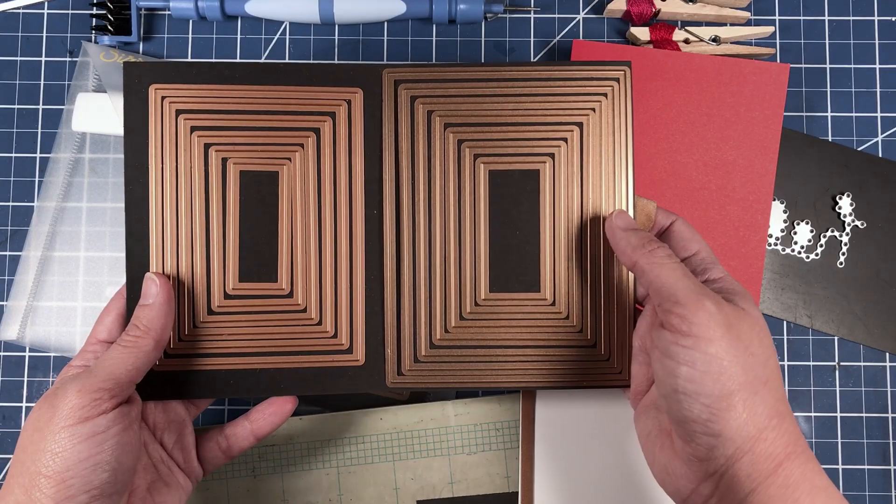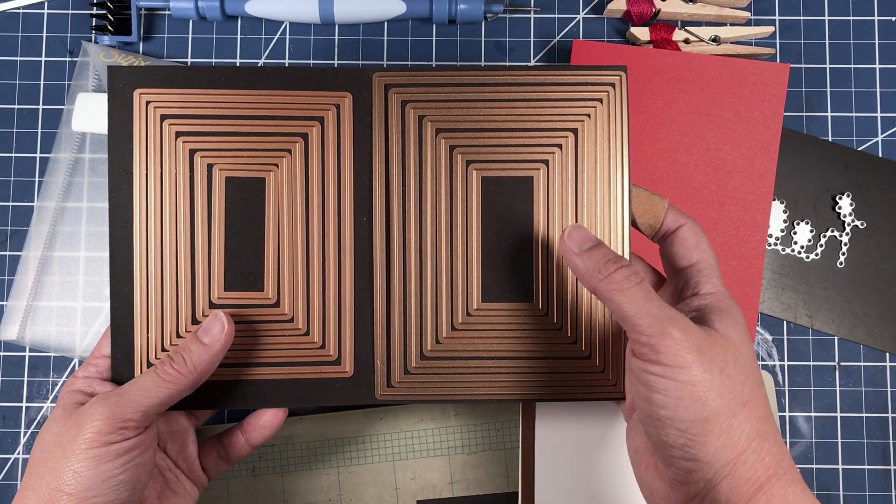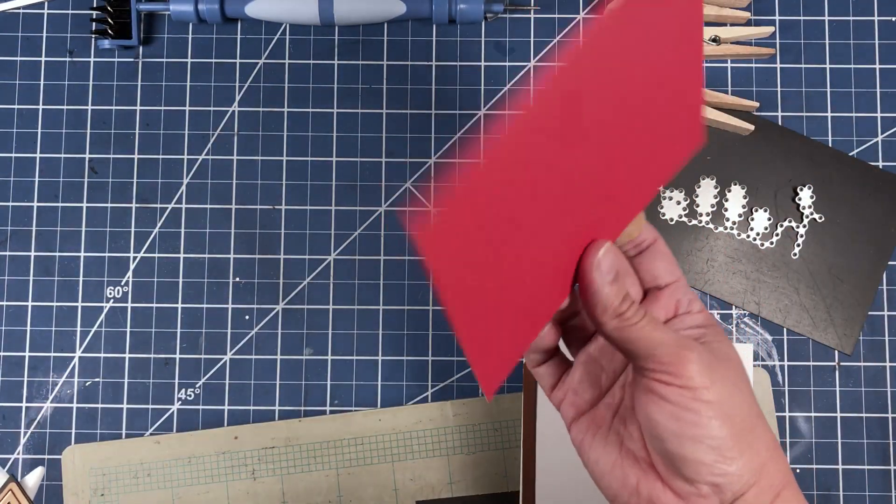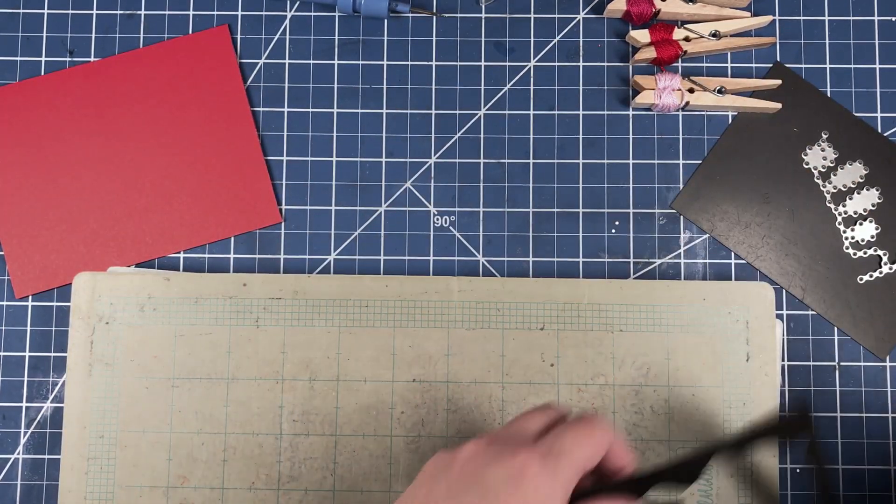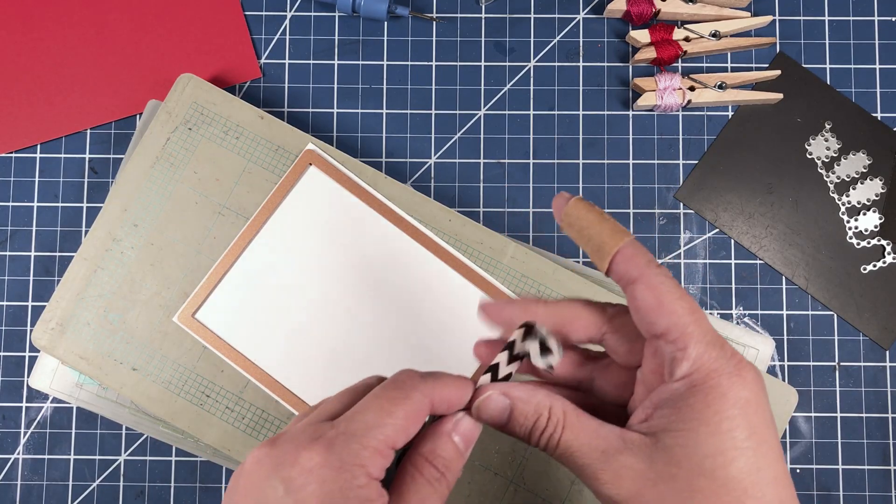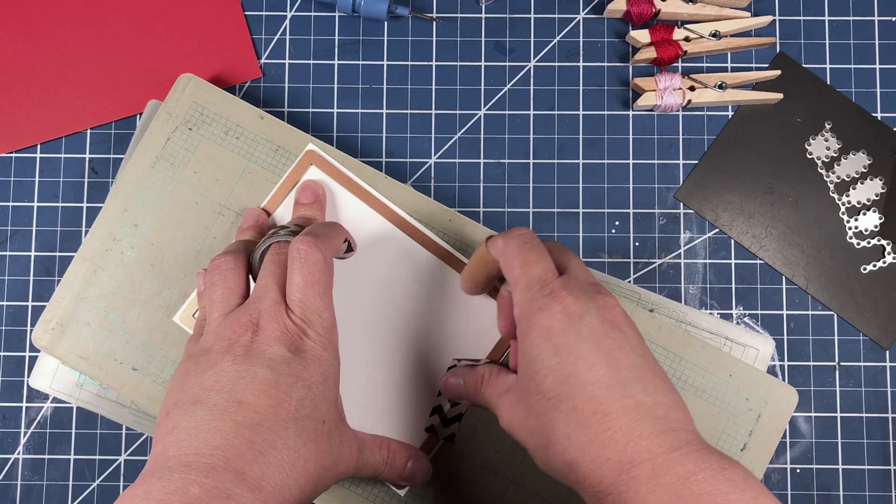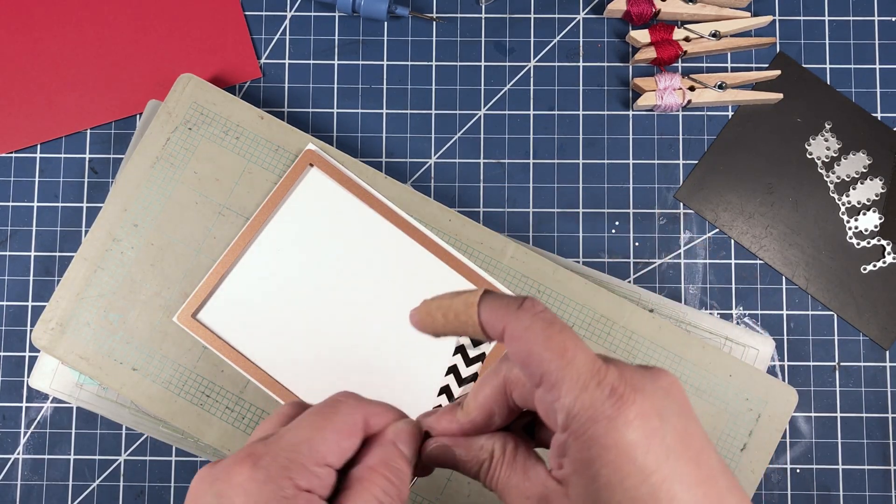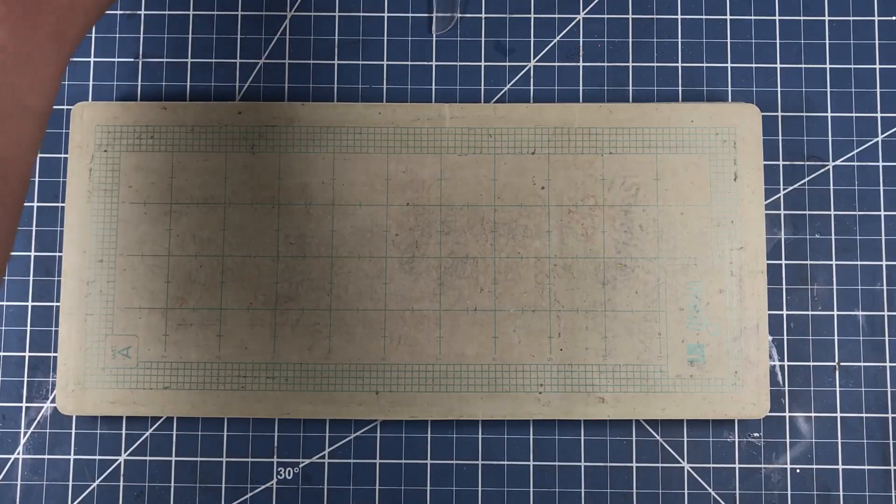They also have this for a couple of other sizes of card base, but I don't usually make cards that are too much bigger than an A2 size card, so this is pretty much all I need. So we've already pre-scored our card base. Now we just need to die cut our card front, so that means we're bringing out our washi tape. I like to use washi tape when I do my die cutting, otherwise if I don't have washi tape on hand I like to use post-it notes.